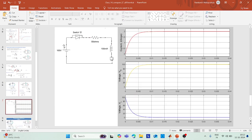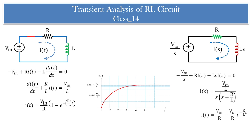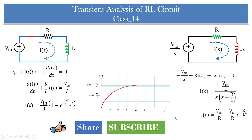When the switch is operated, the waveforms of current and voltage are shown across the respective passive elements. In the next class, we will look at more numericals on transient analysis using MATLAB, and also explore RC and RLC circuit behavior. Try calculating current and voltage conditions for different values of voltage, resistance, and inductance on your own. Please share this video with friends, subscribe to the channel, and press the bell icon for future notifications.